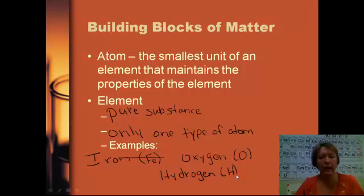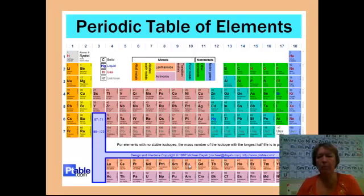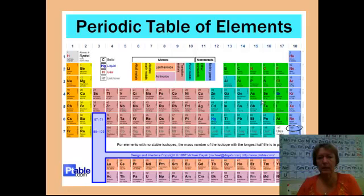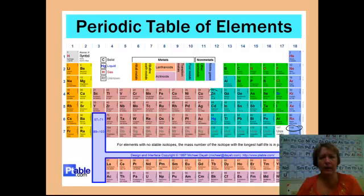Notice these elements all only have one name. If we look at the periodic table — something you're going to become very familiar with by the end of this class — the periodic table lists 118 spaces. Some of the last elements have been discovered; some have not actually been documented as existing. But most of the upper elements have been isolated, identified, and their properties have been identified. Zn is zinc, nitrogen is N — all of these are elements, a single type of atom that makes up that particular element.